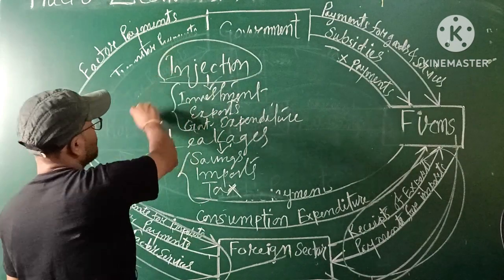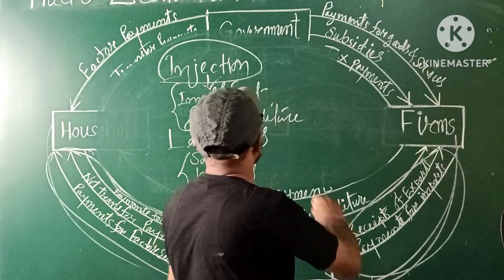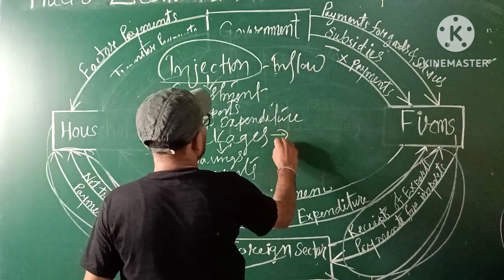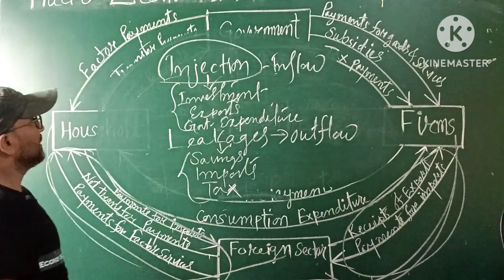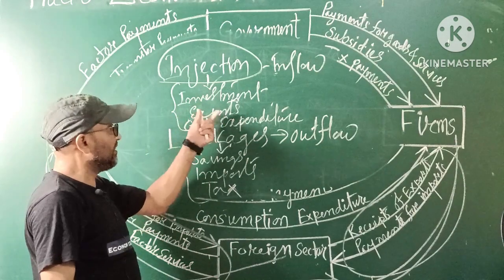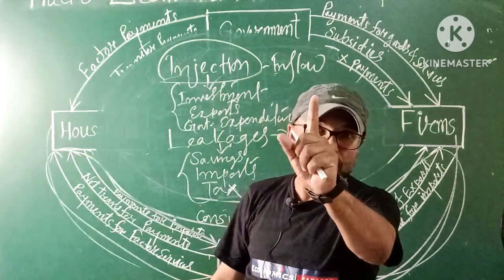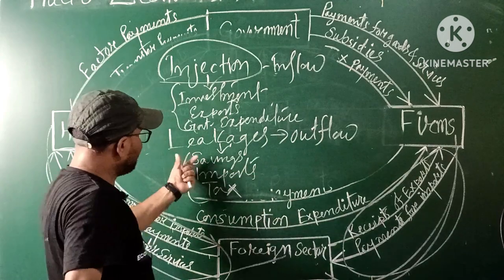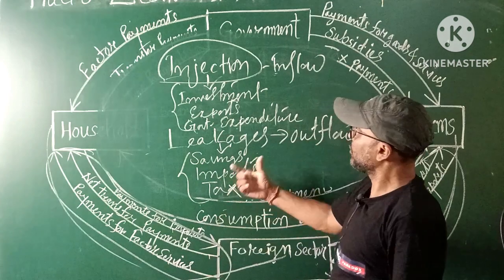Injection is nothing but inflow, and leakage is nothing but outflow. So: Injection examples are Investment, Exports, and Government Expenditure — these are inflows into the circular flow. Leakage examples are Savings, Imports, and Tax — these are outflows from the circular flow.